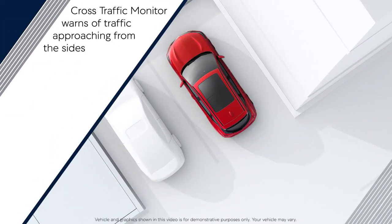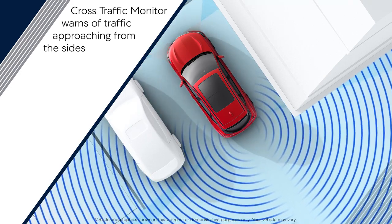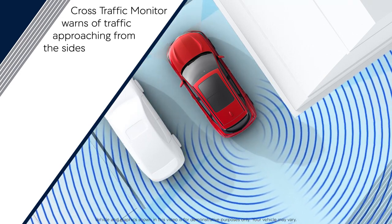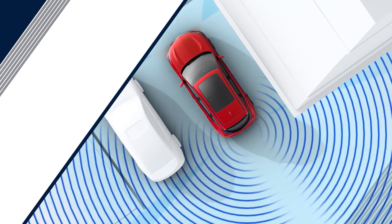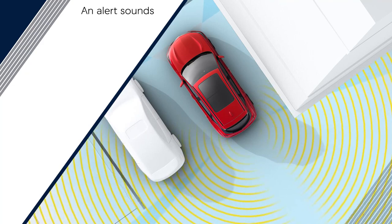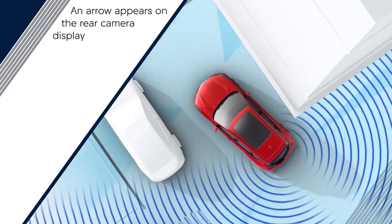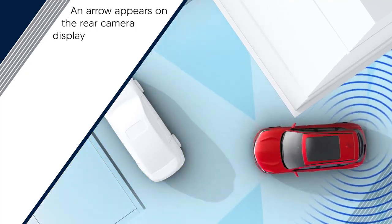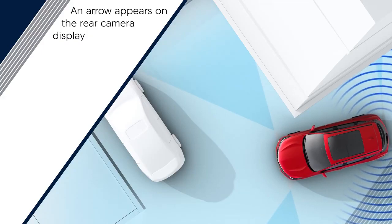When reversing in a parking lot, the available cross-traffic monitor can warn of traffic approaching from either side, helping you stay aware of your surroundings. An alert sounds if an approaching vehicle is detected, and an arrow appears on the rear camera display indicating which direction the vehicle is coming from.